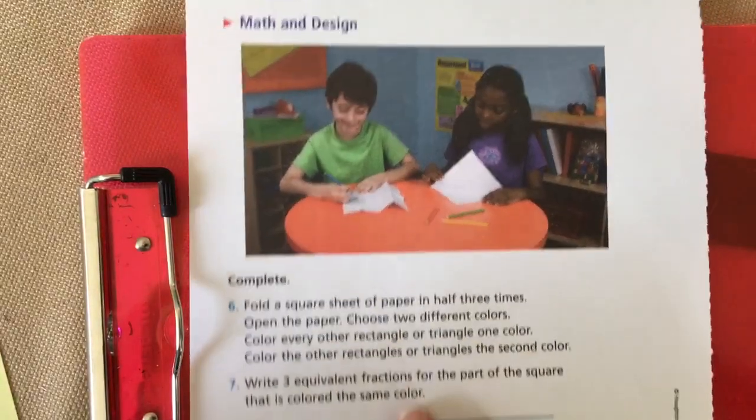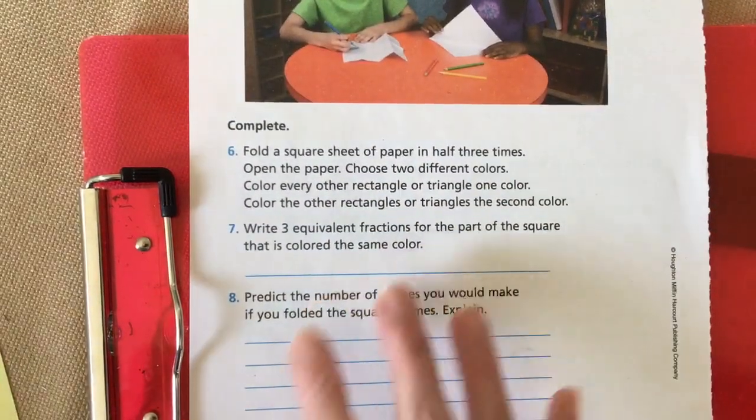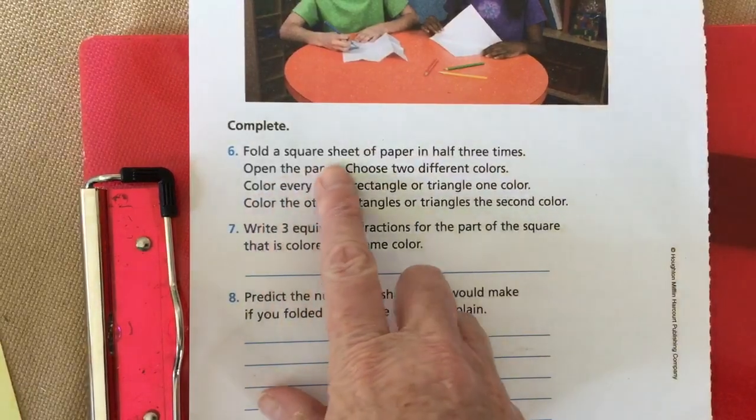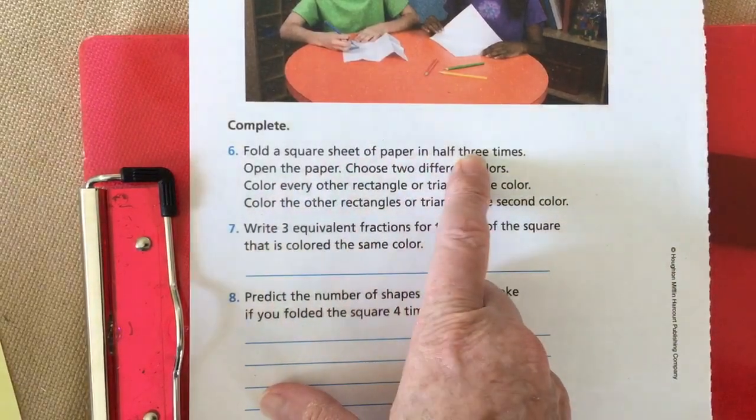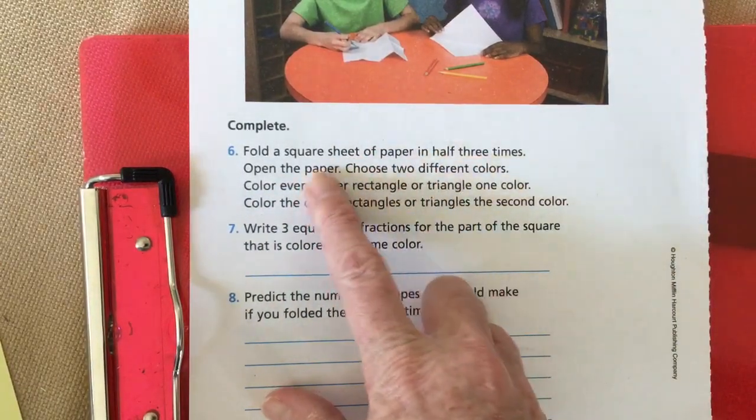Then on to the back. It's just some more folding. They want you to fold a square sheet of paper in half three times and then open the paper.